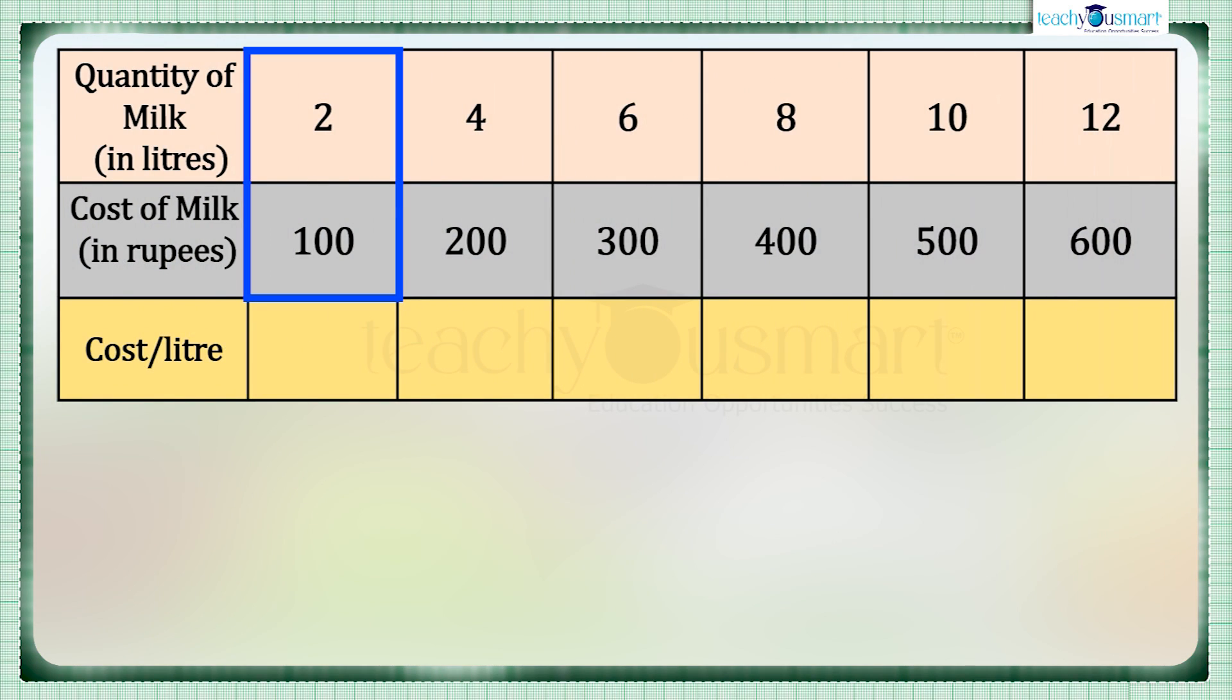The cost of two liters of milk is 100 rupees. Clearly we can say that the cost of one liter of milk is 100 by 2 equals 50 rupees. Similarly, we can obtain the cost of milk per liter in each case.